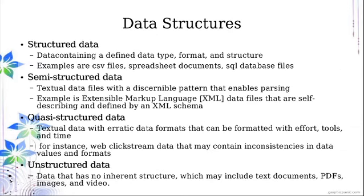Now let's discuss the different data structures. We have basically four types, which can be summarized into two: structured and unstructured data. Structured data contains a defined data type, format, and structure. Examples are CSV files, spreadsheet documents, and SQL databases. These are data with specified column headers that can be properly segregated — you have rows and columns, and each piece of information can be placed into specific columns.